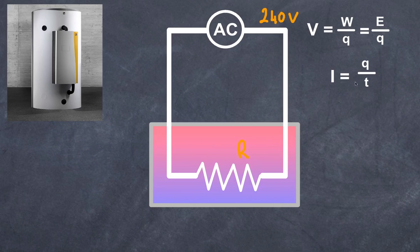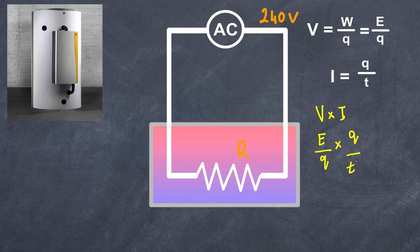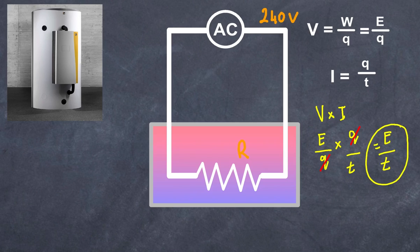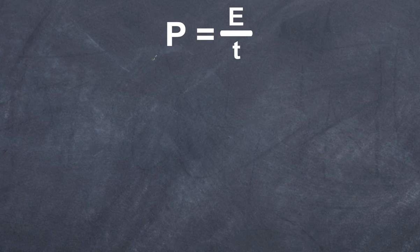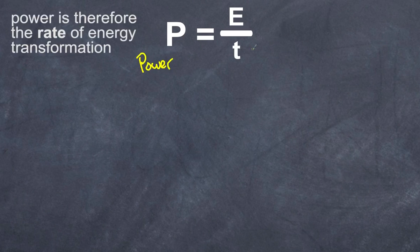What happens if we multiply voltage V by current I? Voltage is energy per charge; multiply that by current, which is charge per second — the charge cancels out, and what we end up with is energy over time. Energy over time is power, and the unit for energy over time is joules over seconds, giving us joules per second.